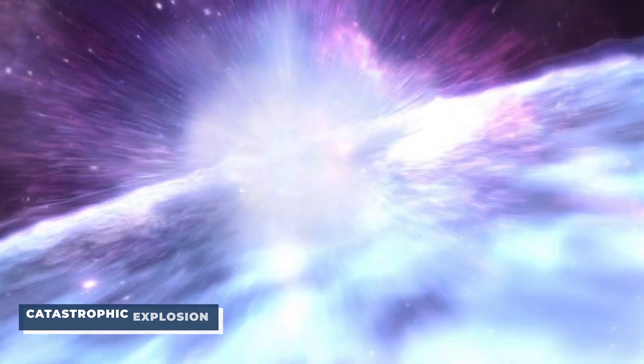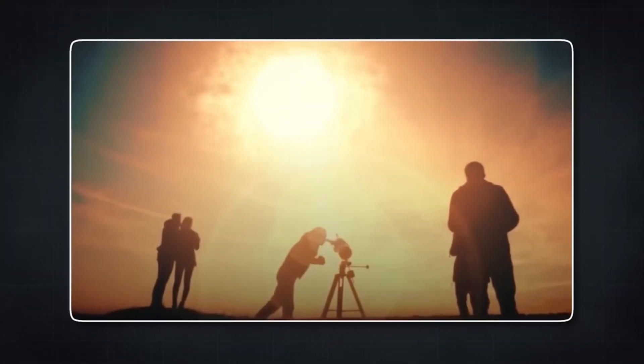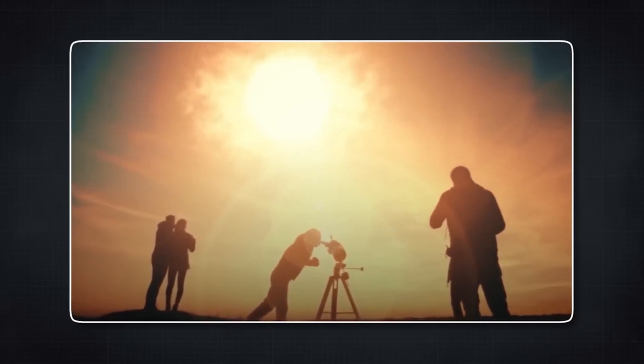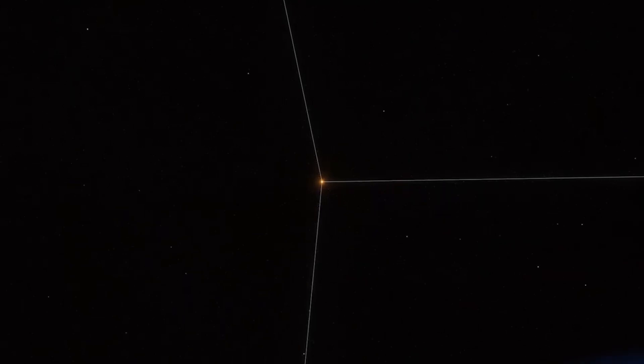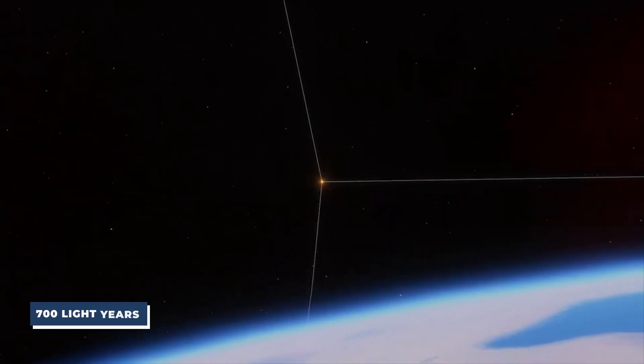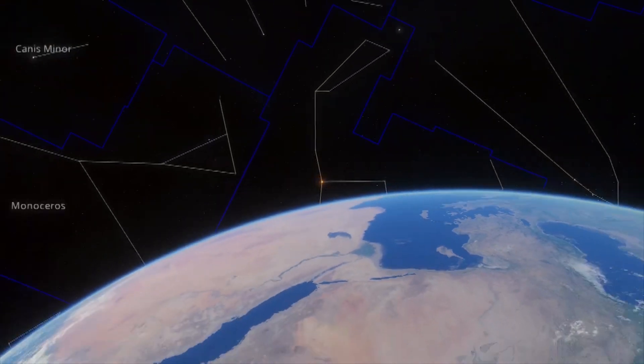Although supernovas can poison the solar systems in their vicinity with fatal radiation, we are in the ideal location to see Betelgeuse's demise. The star is at an approximate distance of 700 light-years from Earth, which suggests that the explosion of Betelgeuse won't have a harmful effect on Earth.